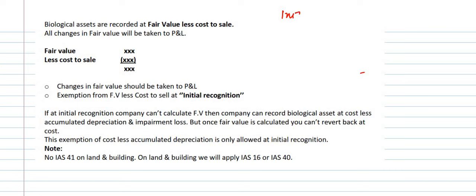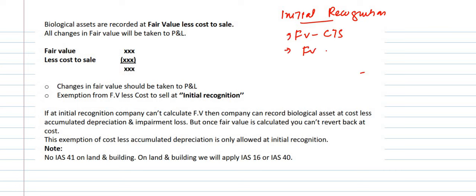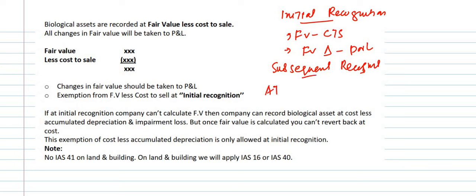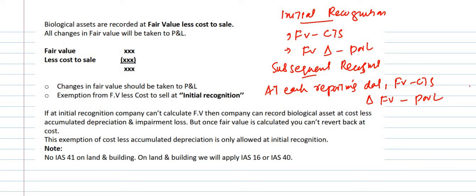At initial recognition, a biological asset is measured at fair value less costs to sell. Any fair value change at initial recognition is recorded in profit or loss. For subsequent measurement, at each reporting date, the biological asset is revalued to fair value less costs to sell, and any change in fair value is again recognized in profit or loss.